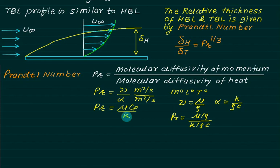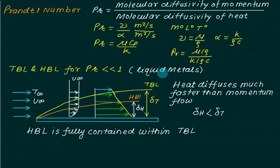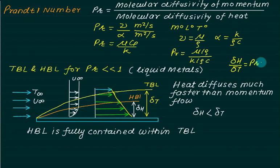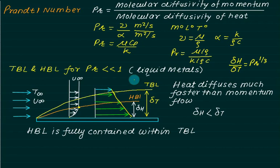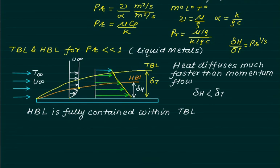For liquid metals, the Prandtl number is much less than one. When Pr is less than one, the relation delta_h divided by delta_t equals Pr to the power one-third gives delta_h less than delta_t. So the hydrodynamic boundary layer thickness is smaller and is fully contained within the thermal boundary layer. The velocity distribution extends from the wall to delta_h, while the temperature distribution spans a larger distance to delta_t.